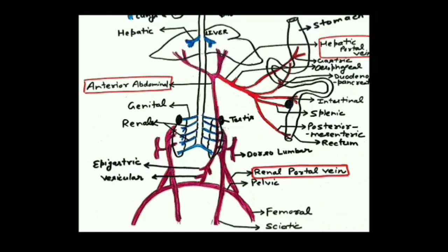The hepatic portal vein and anterior abdominal vein together make up the hepatic portal system. Blood from the stomach and intestine is rich in digested food — glucose and amino acids. These extra nutrients are sent to the liver, where liver converts excess glucose into glycogen for storage as reserve food, and excess amino acids are deaminated to form urea. This is the significance of the hepatic portal system: it supplies deoxygenated but nutrient-rich blood to the liver for assimilation.